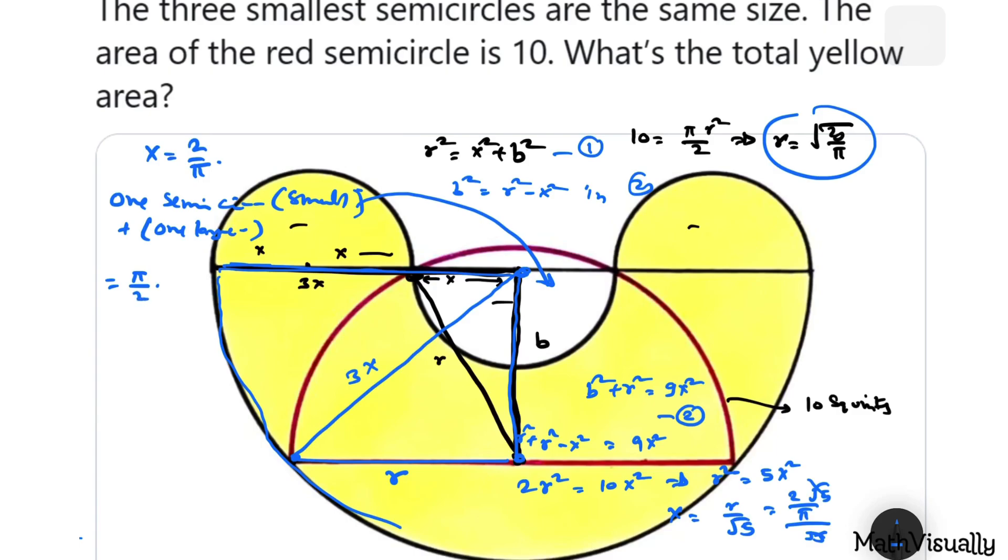That means the area is semicircle area π/2 · x² plus the largest one, π/2 · (3x)². That is 9x² plus x² = 10x², and this is all multiplied by π/2. So this is basically 5x² · π.